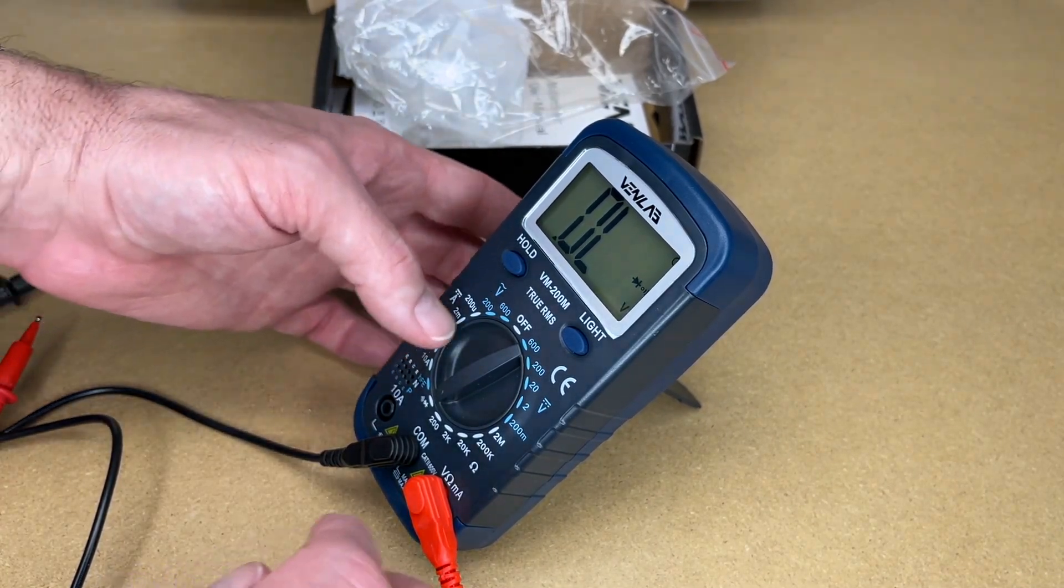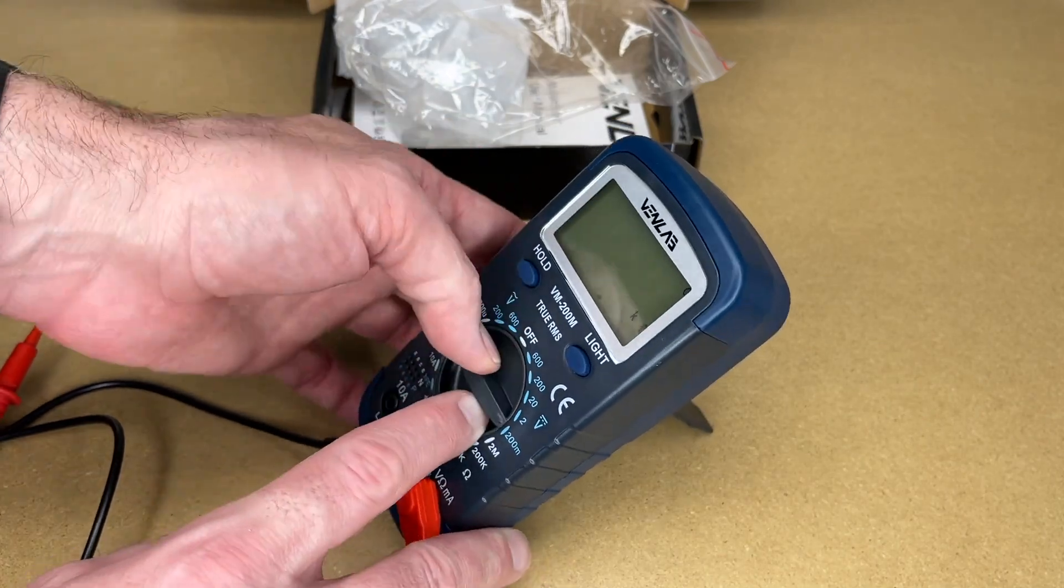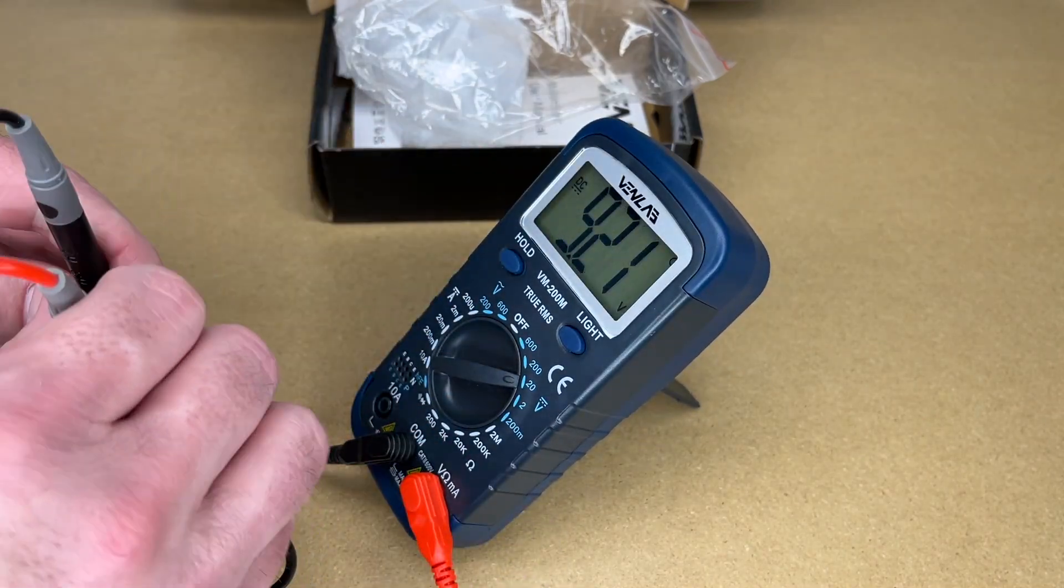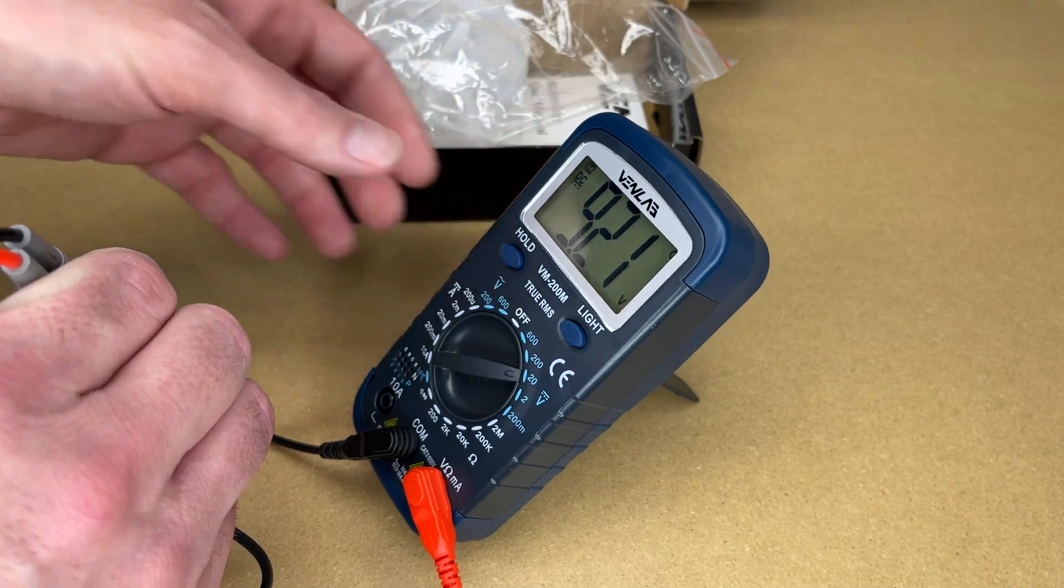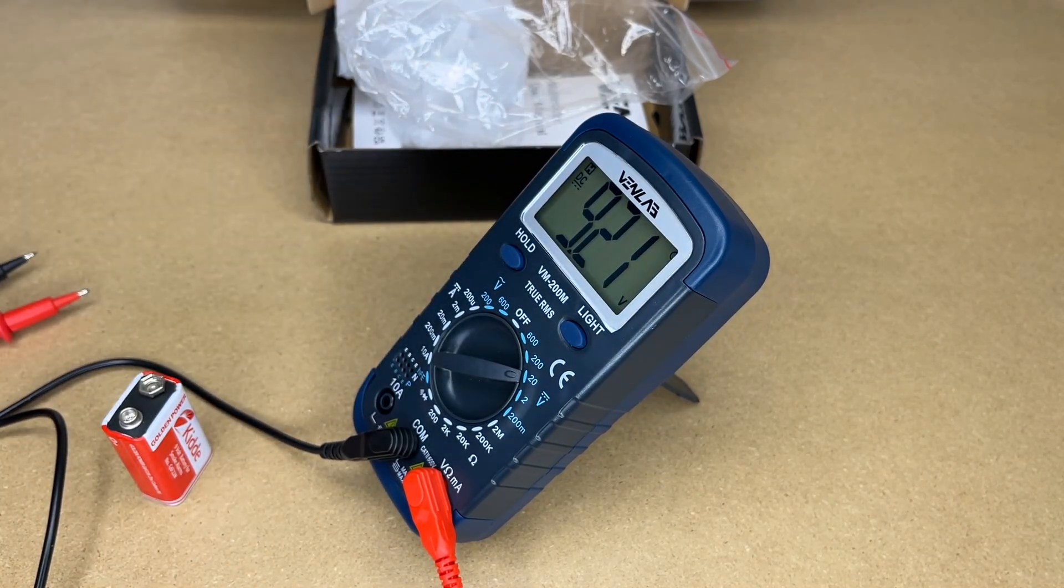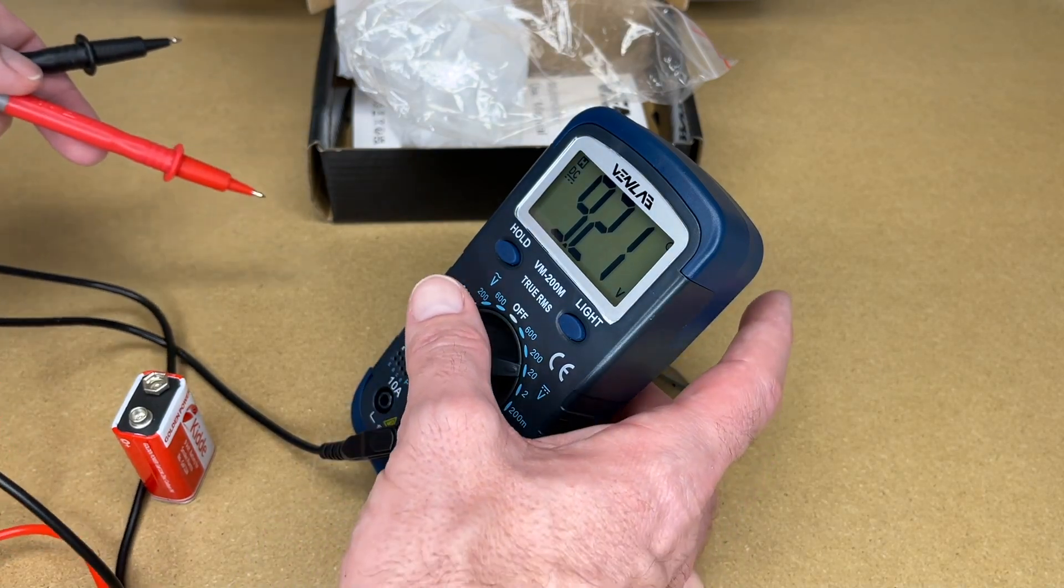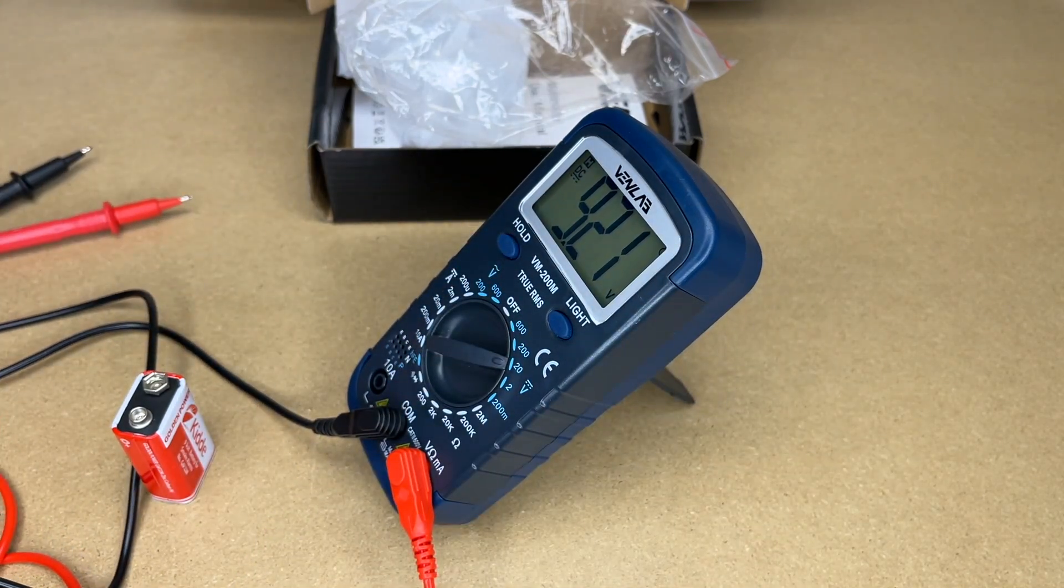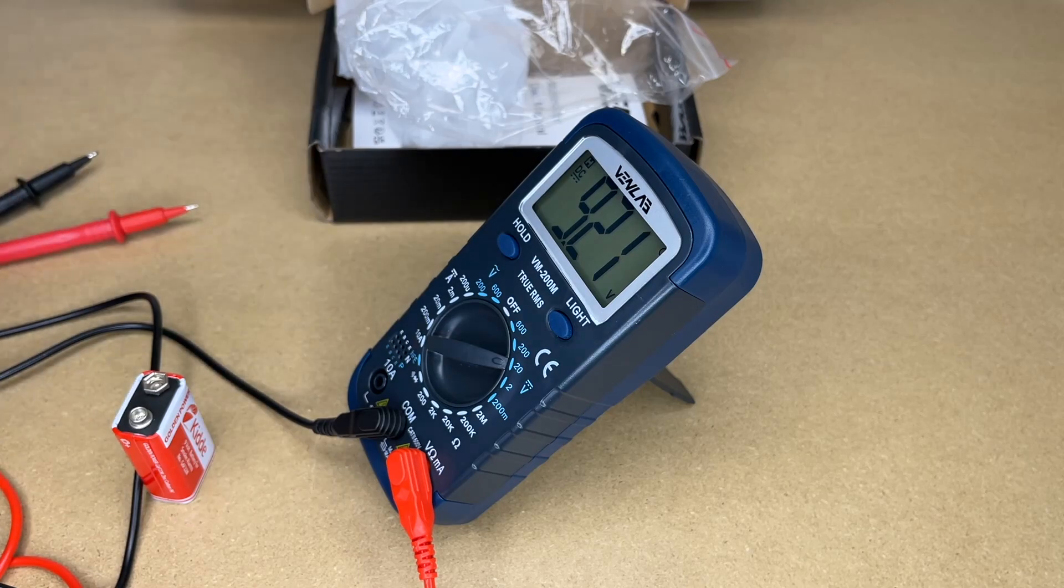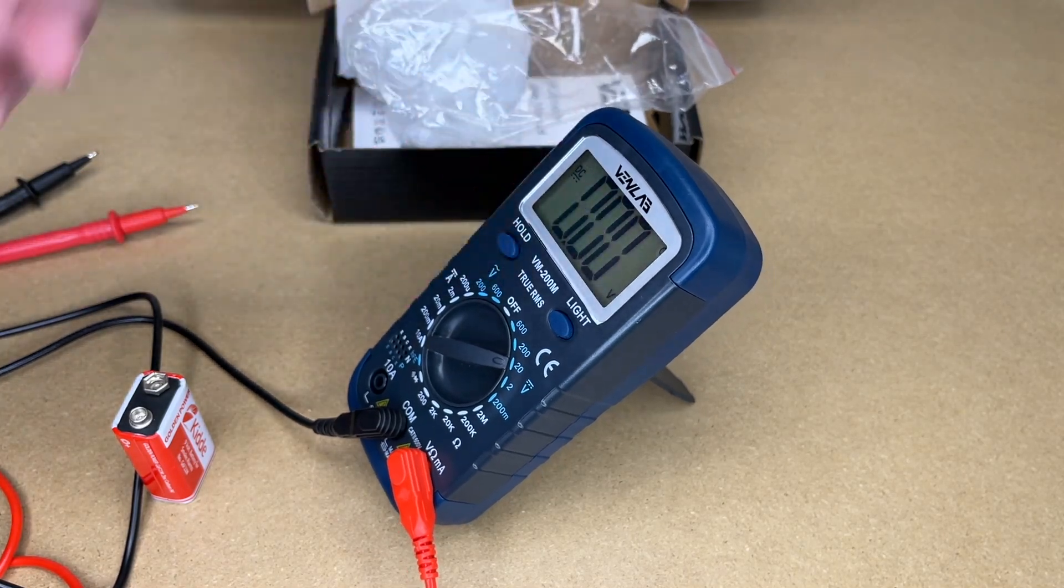And then let's test the hold too. Let's go back to the 9 volts since it's here. So I can press hold, and it'll hold that value. If you're measuring something and you can't see the meter very easy, you can hold onto the probes, press that hold button, and it will hold the value. Or if you're just not good at remembering. And then when we press it again, it'll go back to zero.